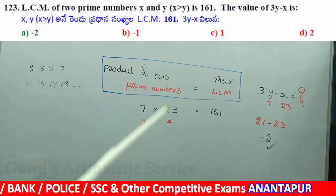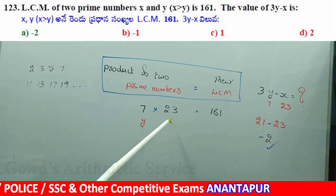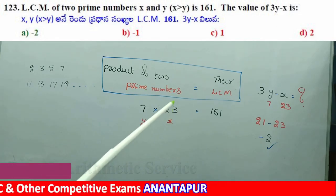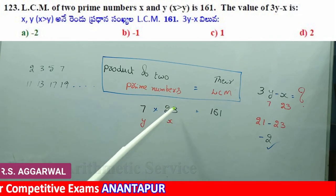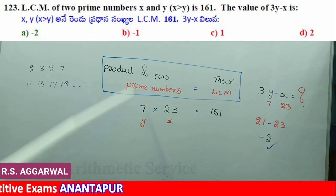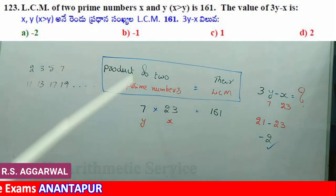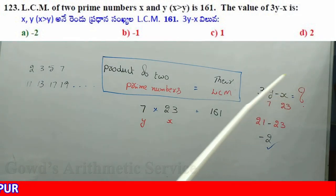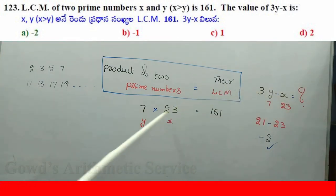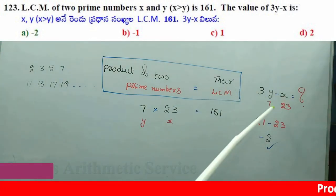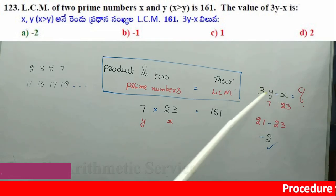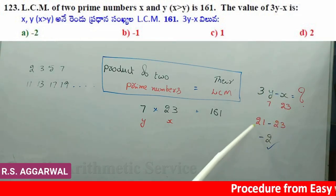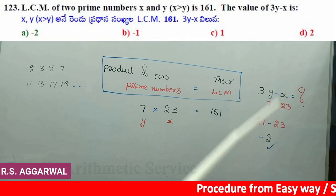Now, x is greater than y. That means x equals 23 and y equals 7. The question is 3y minus x. What is 3y? y is 7, so 3 into 7 is 21. x is 23. So 21 minus 23 equals minus 2.